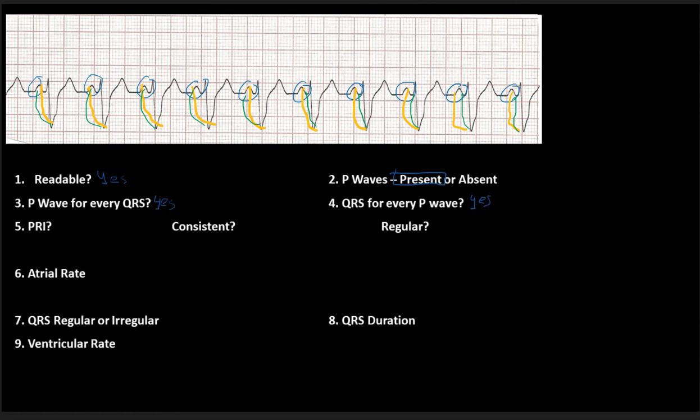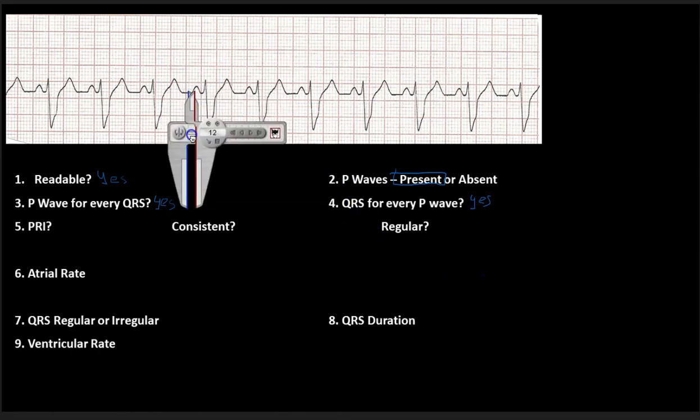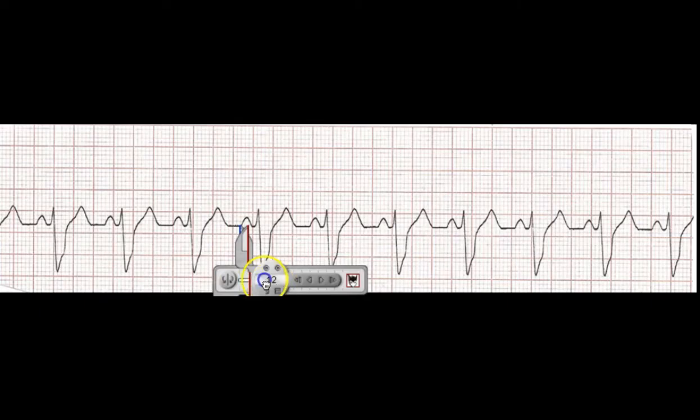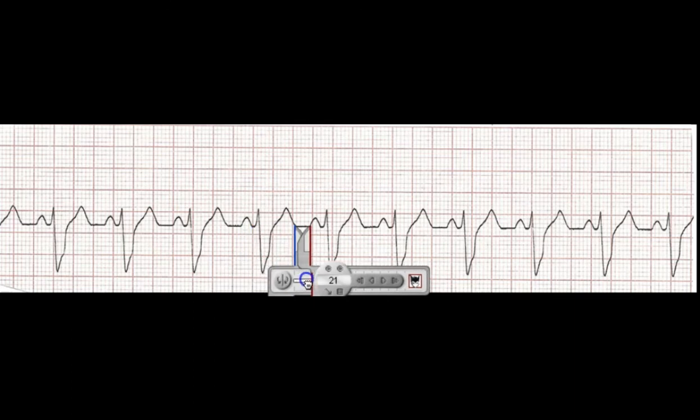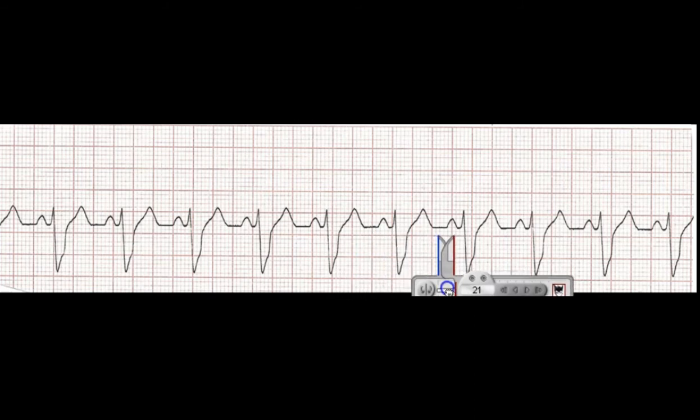Now I need to take a look at my PR interval. Is it consistent? And are things regular? So to do this, I'm going to pull in my calipers. And we're going to find a nice little P wave. That one looks pretty darn good. Look at my PR interval. So I'm now going to say, yep, that looks like my PR interval. Let's measure this sucker out and make sure that it is consistent.